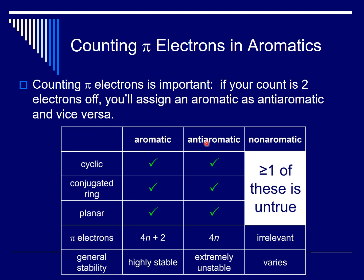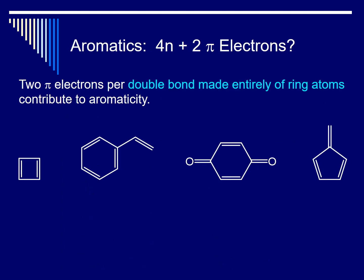To determine if something is aromatic or anti-aromatic, you have to count the number of pi electrons, or the number of electrons conjugated in the ring. If the number is a multiple of 4, the compound is anti-aromatic. If it's a number in the 4n+2 series, or a Hückel number, it's aromatic. For every double bond in the ring — it has to be in the ring — you count 2 pi electrons, because a double bond is made up of a sigma and a pi bond, and the pi bond has 2 pi electrons.